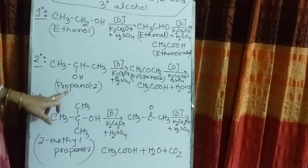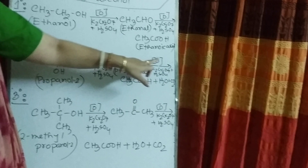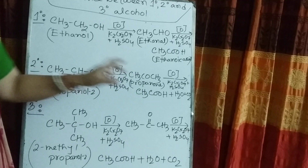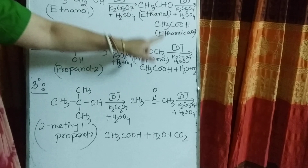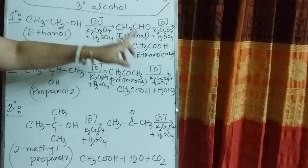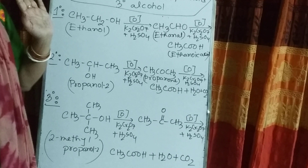For secondary alcohol, I have taken propan-2-ol. When oxidized, it converts to propanone, which again oxidized converts to ethanoic acid. In propan-2-ol there are 3 carbons, in propanone also 3 carbons, but in ethanoic acid there are only 2 carbons. So carbon number decreases when propan-2-ol is finally oxidized.